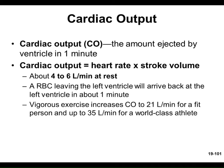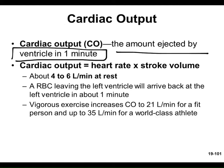How much blood are you pumping out each heartbeat? About 70 mL — that's the stroke volume, SV. Another key term is cardiac output, CO — the amount of blood ejected by a ventricle per minute. Cardiac output equals heart rate times stroke volume. At rest for an average person, cardiac output is between 4 and 6 liters per minute.